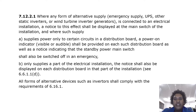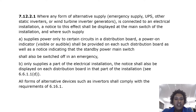Where any form of alternative supply — emergency supply, UPS, other static inverters, or wind turbine inverter generators — is connected to an electrical installation, a notice to this effect shall be displayed at the main switch of the installation. Where such supply provides power only to certain circuits in a distribution board, a power-on indicator (visible or audible) shall be provided on each such distribution board, along with a notice indicating that the standby power main switch shall also be switched off in an emergency.